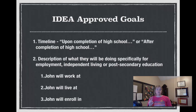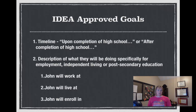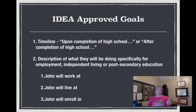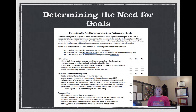IDEA-approved transition goals have to have two things: a timeline and a description of what the student will be doing specifically in three areas — employment, independent living, or post-secondary education. Typically the timeline is upon or after completion of high school, and then we would say 'John will work at,' 'John will live at,' or 'John will enroll in.' When developing those goals, keep these two things in mind along with the specific description related to those three areas.